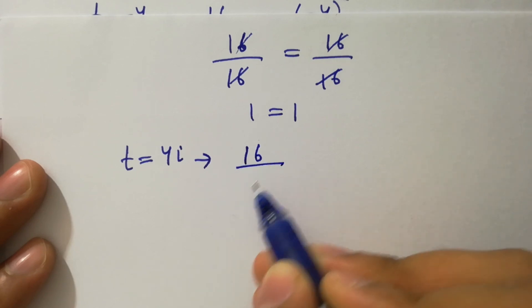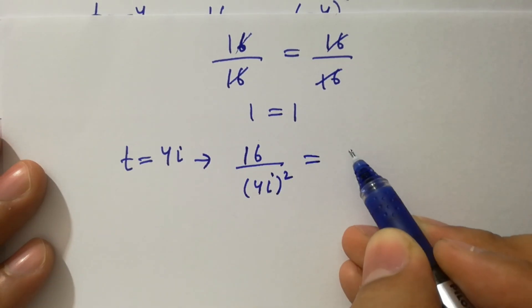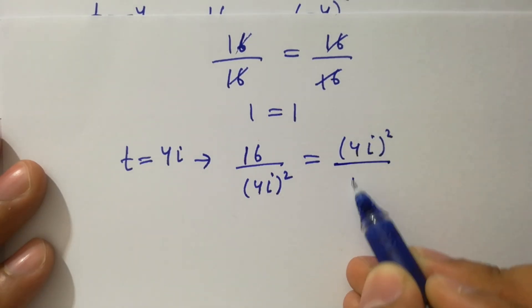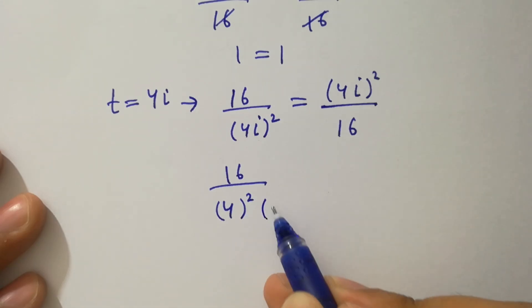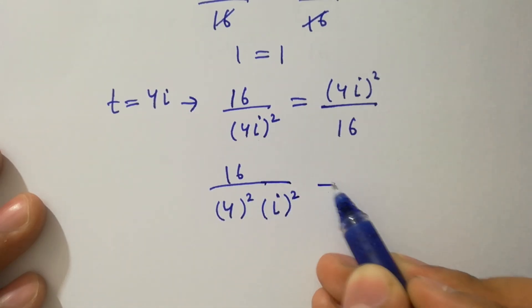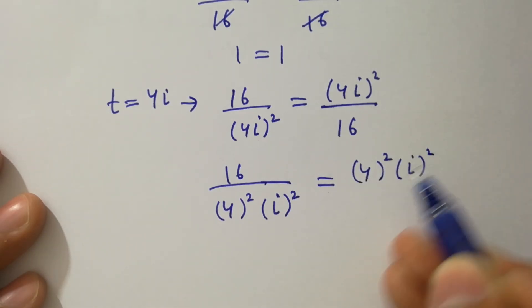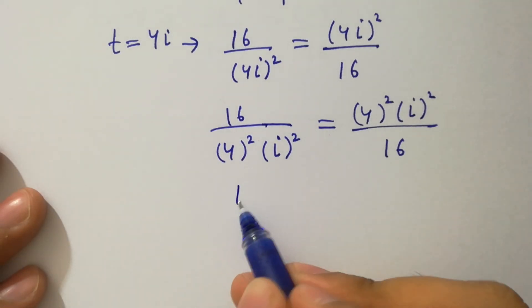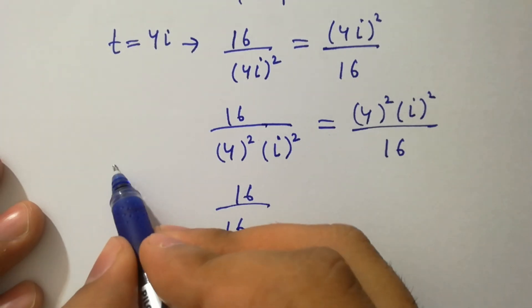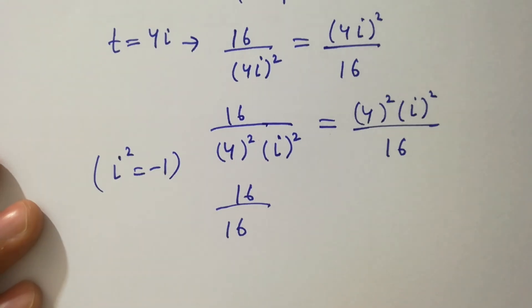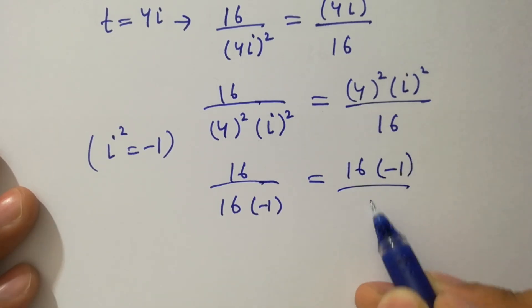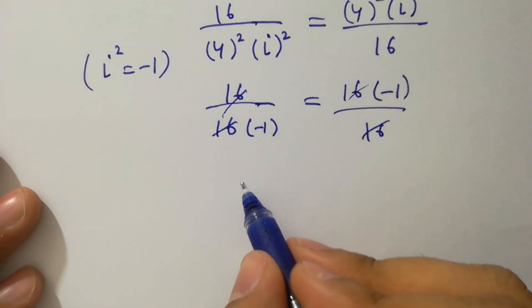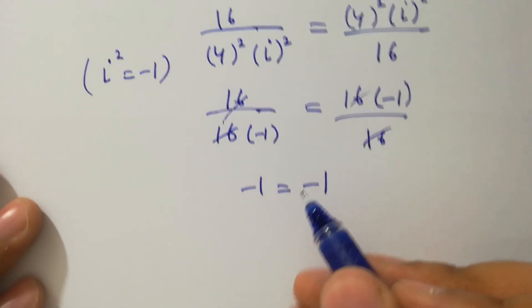Now take t equals 4i and put it into the equation: 16 over (4i) squared equals (4i) squared over 16. Solving, 16 over 4 squared times i squared equals 4 squared times i squared over 16. Since i squared equals minus 1, we get minus 1 equals minus 1. Left hand side equals right hand side.